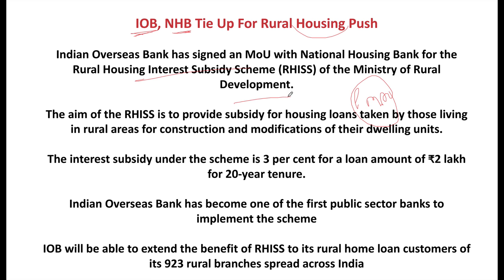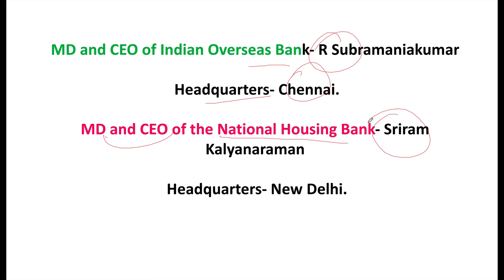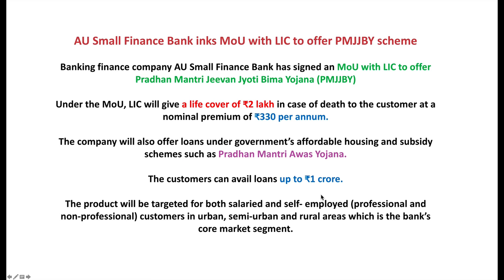Indian Overseas Bank and National Housing Bank are tying up for a rural housing push under Pradhan Mantri Awas Yojana — Housing for All. This is the Rural Housing Interest Subsidy Scheme (RHISS) of the Ministry of Rural Development. The aim is to provide interest subsidy for housing loans taken by people in rural and far-flung areas. The interest subsidy under the scheme is 3% for a loan amount of 2 lakh for a 20-year tenure. MD & CEO of National Housing Bank is Shri Ram Kalyan Raman, headquartered in New Delhi.